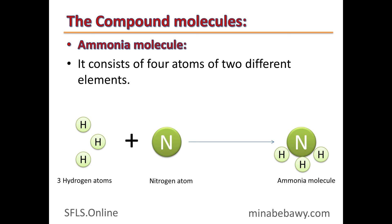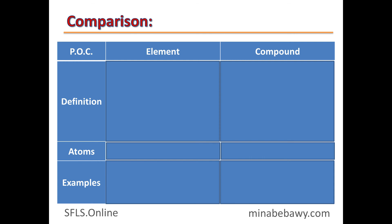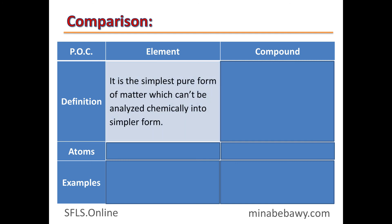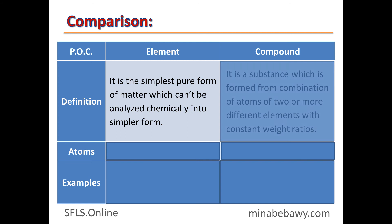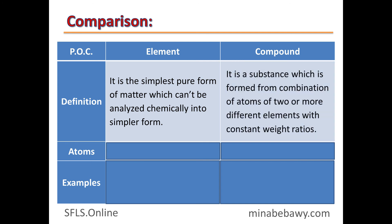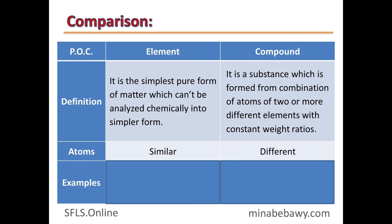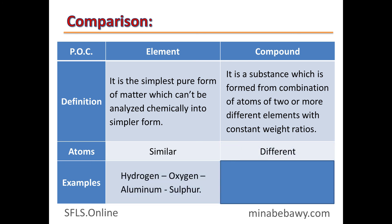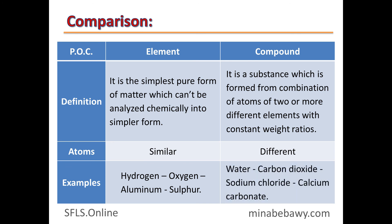Another example: ammonia (NH3) consists of four atoms of two different elements — three hydrogen atoms plus one nitrogen atom combine to form the ammonia molecule. Now let's compare element and compound: an element is the simplest pure form of matter which can't be analyzed chemically into a simpler form; a compound is a substance formed from the combination of atoms of two or more different elements with constant weight ratios. Elements are formed from similar atoms, while compounds are formed from different atoms. Examples of elements: hydrogen, oxygen, aluminum, sulfur. Examples of compounds: water, carbon dioxide, sodium chloride, calcium carbonate.